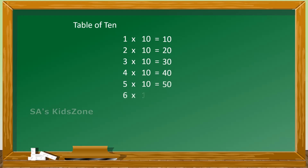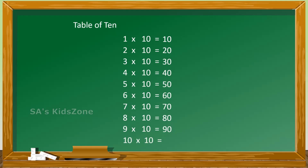6 tens are 60, 7 tens are 70, 8 tens are 80, 9 tens are 90, 10 tens are 100.